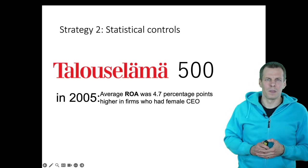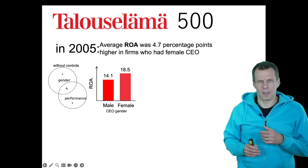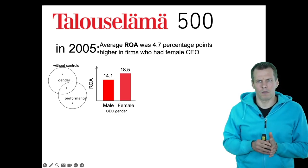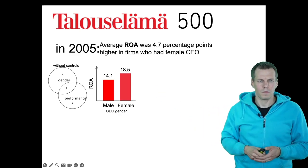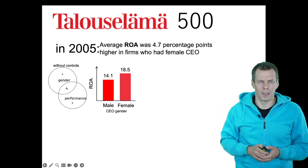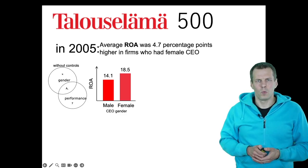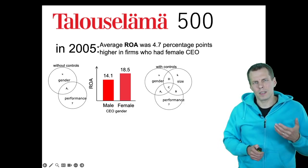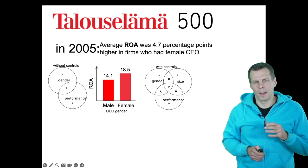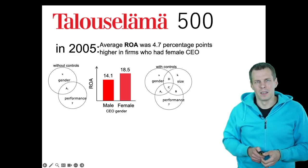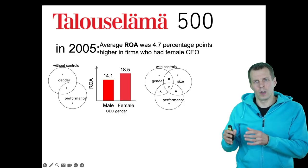The more common strategy is statistical controls. The idea is that if performance and CEO gender are correlated — say male-led companies have an average ROA of 14.1% and women-led companies have 18.5% — that comparison has no controls. One strategy to control for size is to observe that most women-led companies have fewer than 250 employees, and make a fairer comparison by sampling only smaller companies, leaving out all large companies.